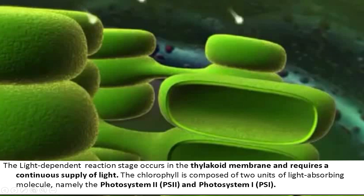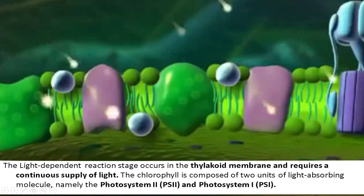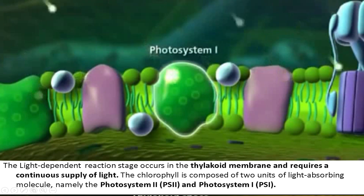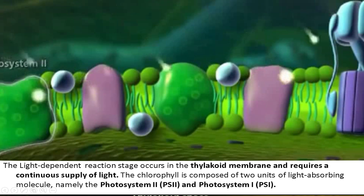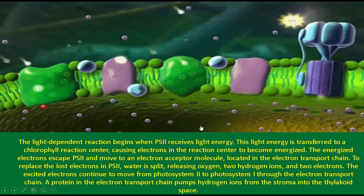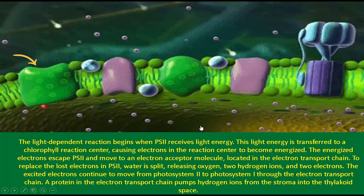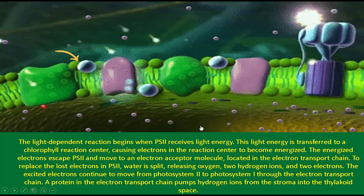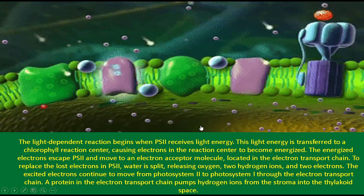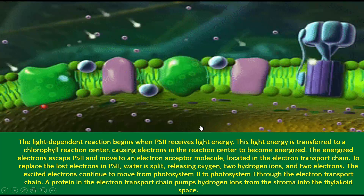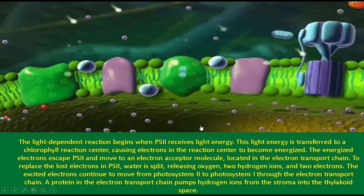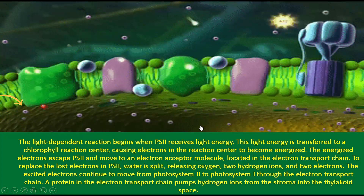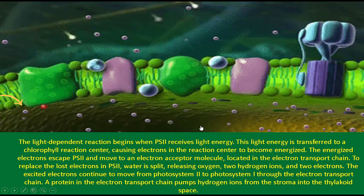The light-dependent reaction stage occurs in the thylakoid membrane and requires a continuous supply of light. The chlorophyll is composed of two units of light-absorbing molecules: photosystem-2 (PS2) and photosystem-1 (PS1). The light-dependent reaction begins when PS2 receives light energy. The light energy is transferred to a chlorophyll reaction center, causing electrons to become energized. The energized electrons escape PS2 and move to an electron acceptor molecule in the electron transport chain. To replace the lost electrons in PS2, water is split releasing oxygen, two hydrogen ions, and two electrons.